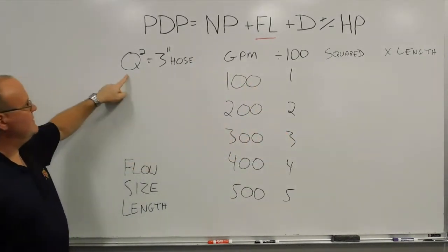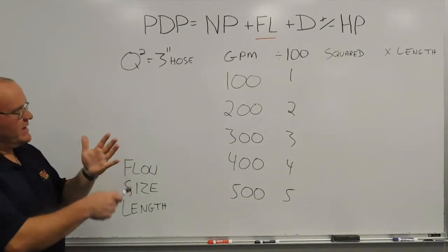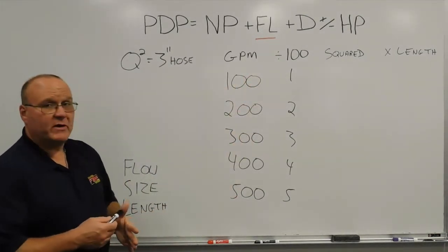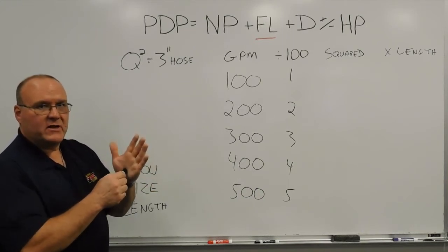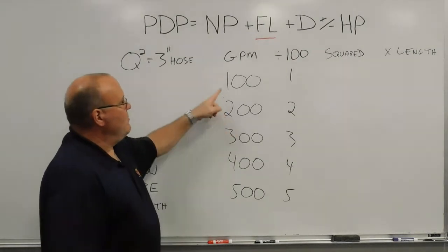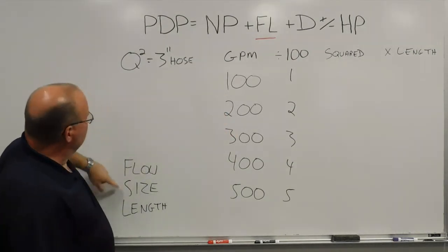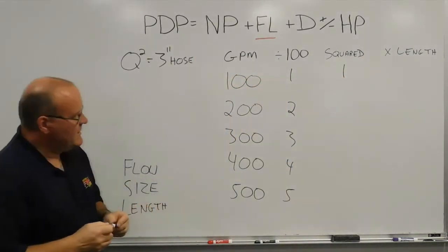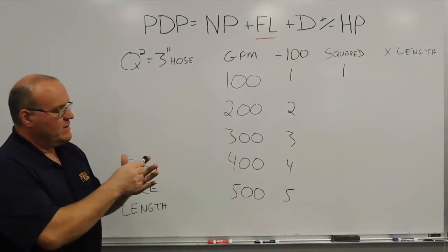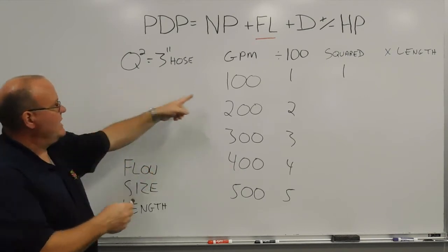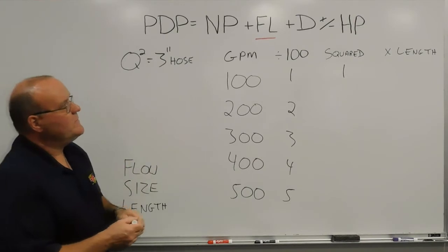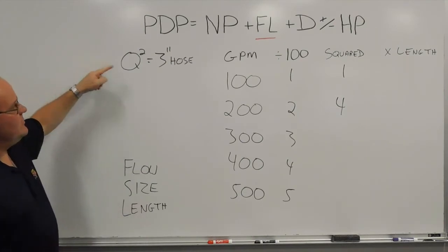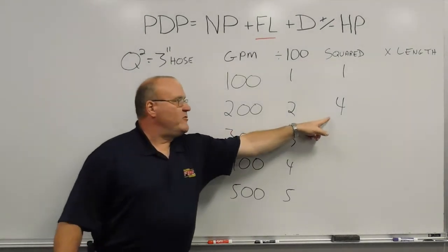From that number, go right to your Q-squared — this is where your hand calculator comes in. For 100 gallons a minute: divide by 100, get 1. There's our multiplication sign — we square it: 1 times 1. So for every 100 feet of 3-inch hose flowing 100 gallons a minute, there's 1 pound of friction loss. For 200 gallons a minute: divide by 100 gives 2, then 2 times 2 gives 4. So for every 100 feet of 3-inch hose flowing 200 gallons a minute, there's approximately 4 pounds of friction loss.